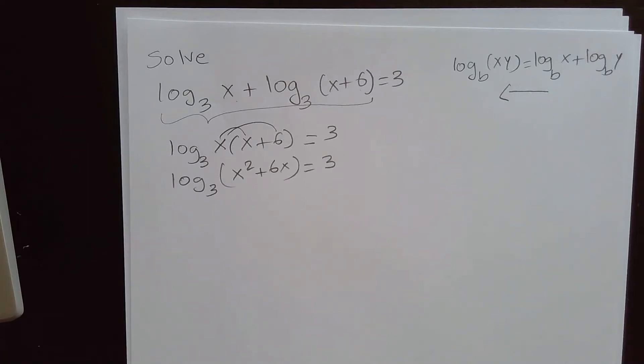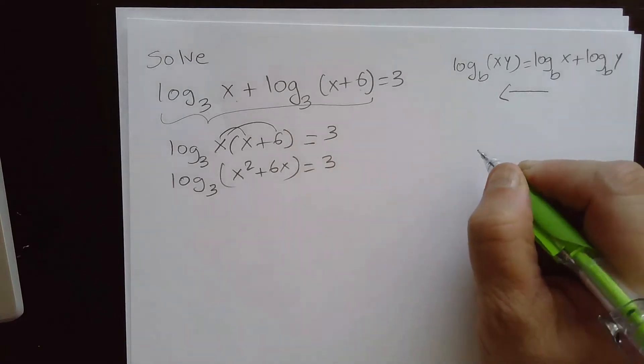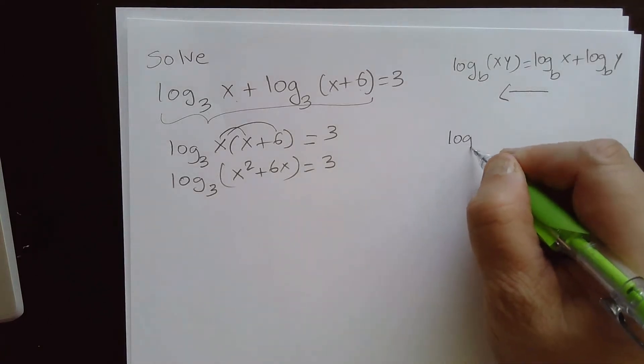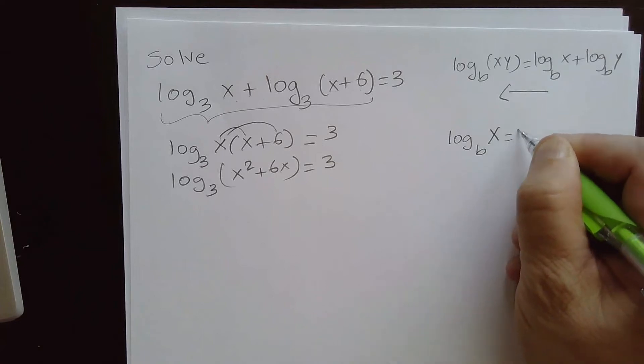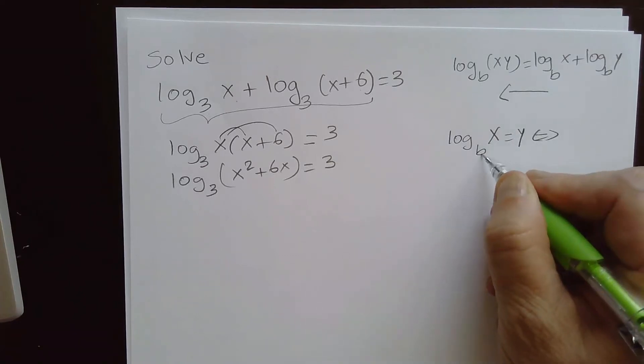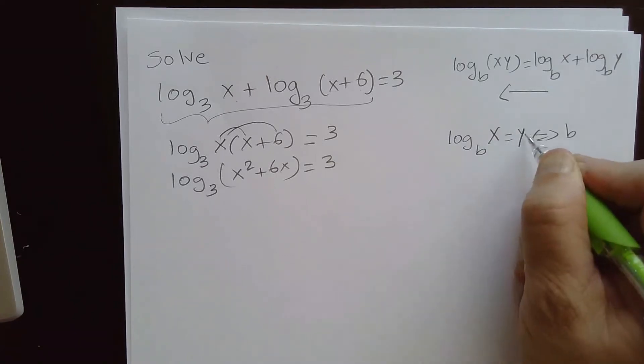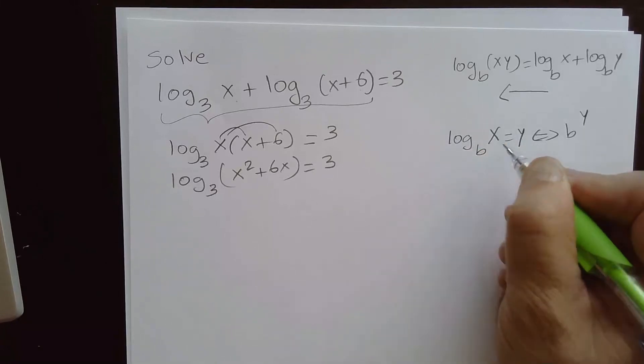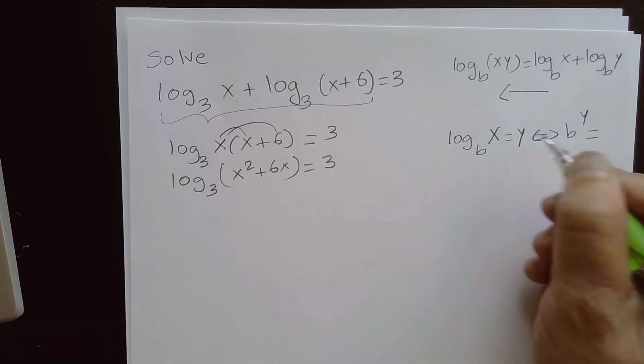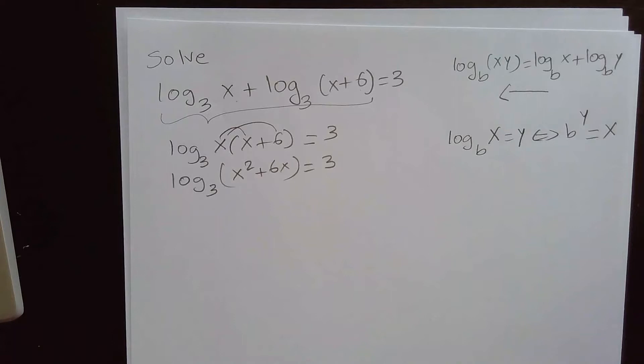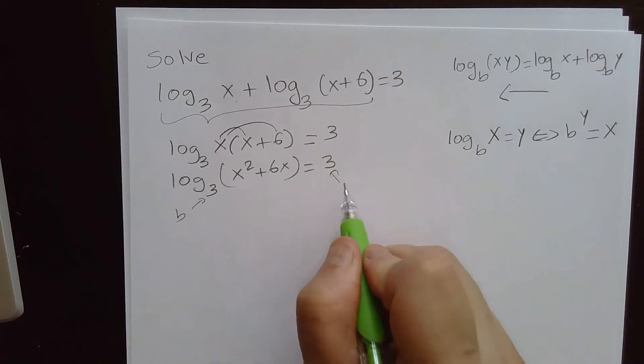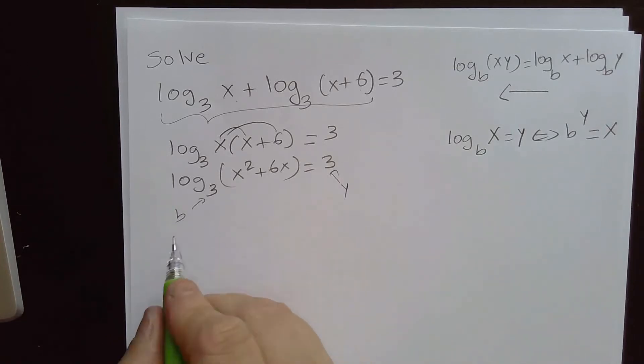Now we need to rewrite this logarithmic equation in exponential form. Let me remind you, we have log b x equal to y that is equivalent to the base b raised to y equal to x. So here the base is 3 and y is also 3. So we write it in exponential form.